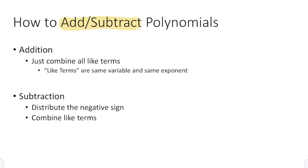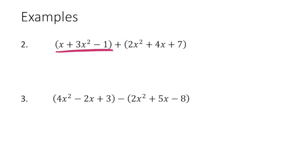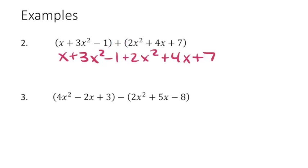This unit is about operations of polynomials. Two very important operations are addition and subtraction. Addition is pretty easy — we're really just combining like terms. For subtraction, we'll need to do something with distribution. So let's look at a couple of examples. This first one is an addition problem, as we see a plus sign between two polynomials. With addition, we're just going to get rid of the parentheses and put it all out there.